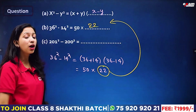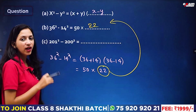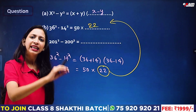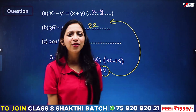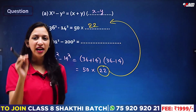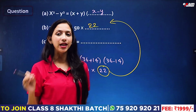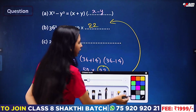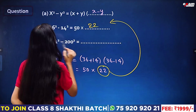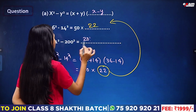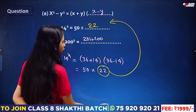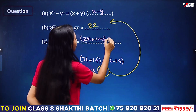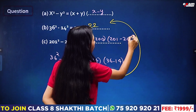Next, we have 201 squared minus 200 squared. We will apply this formula: x squared minus y squared is equal to x plus y into x minus y. This is the same application. We get 201 plus 200 into 201 minus 200.